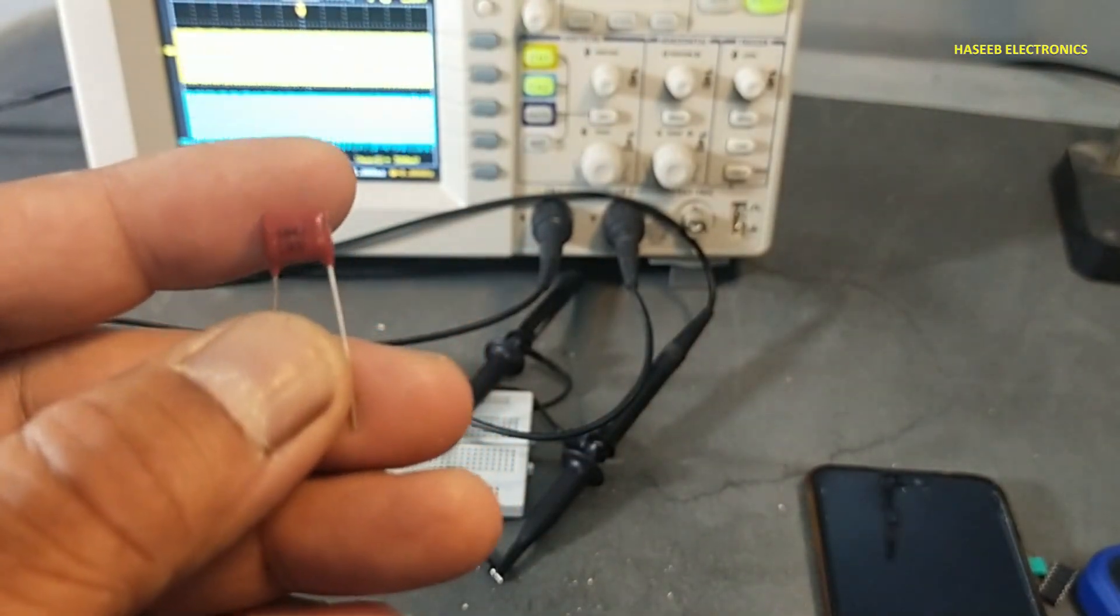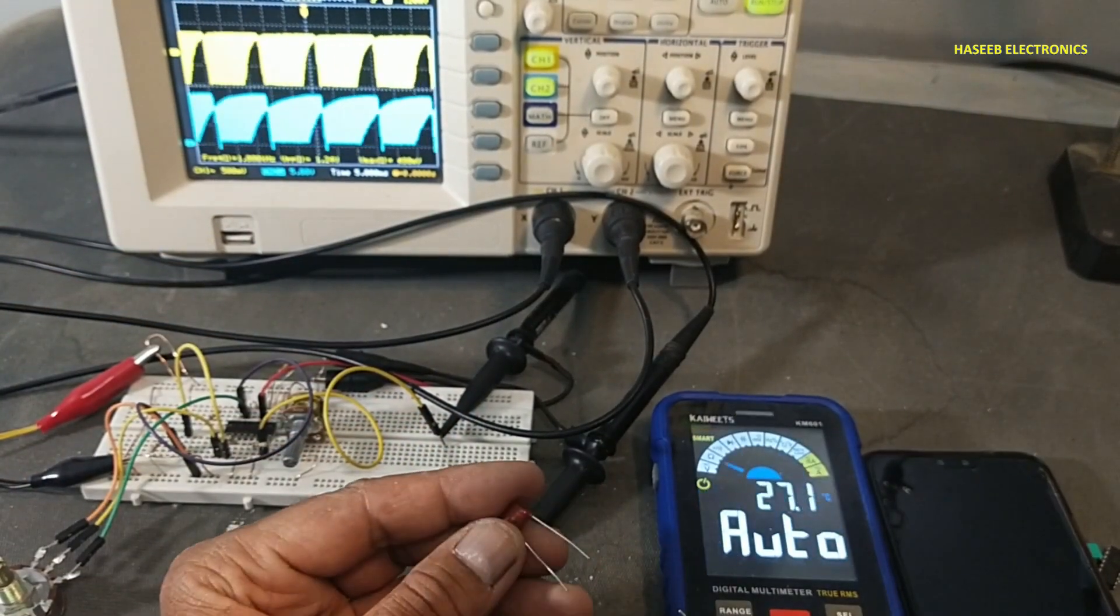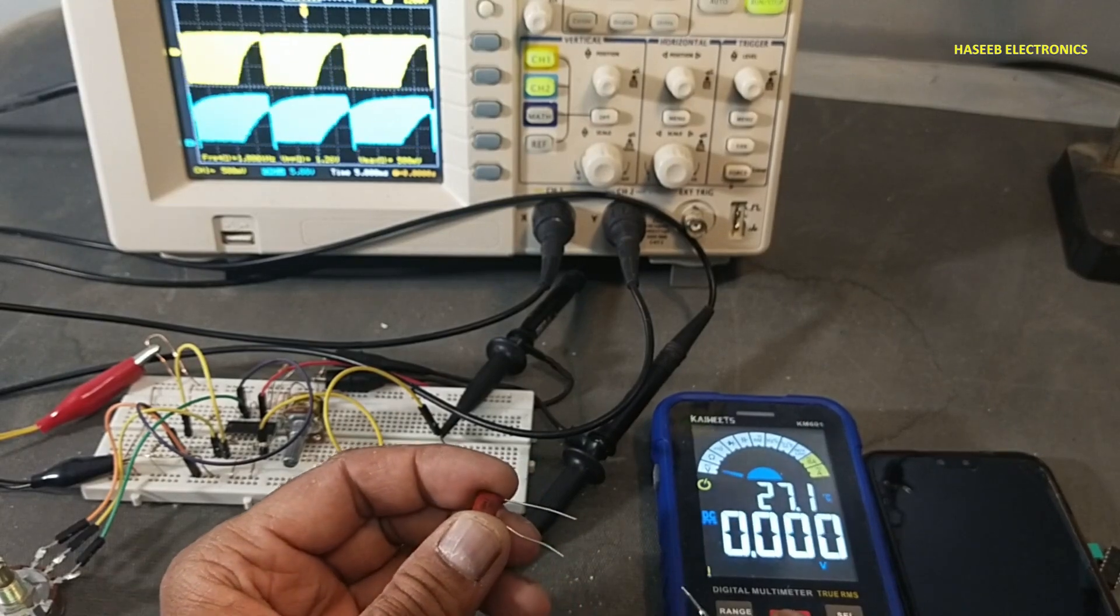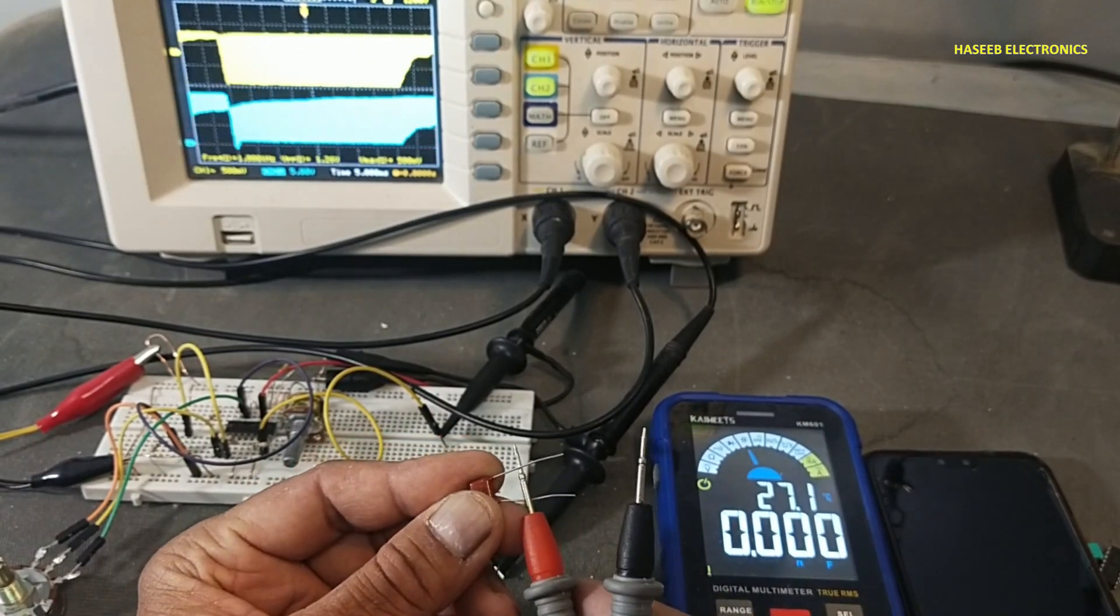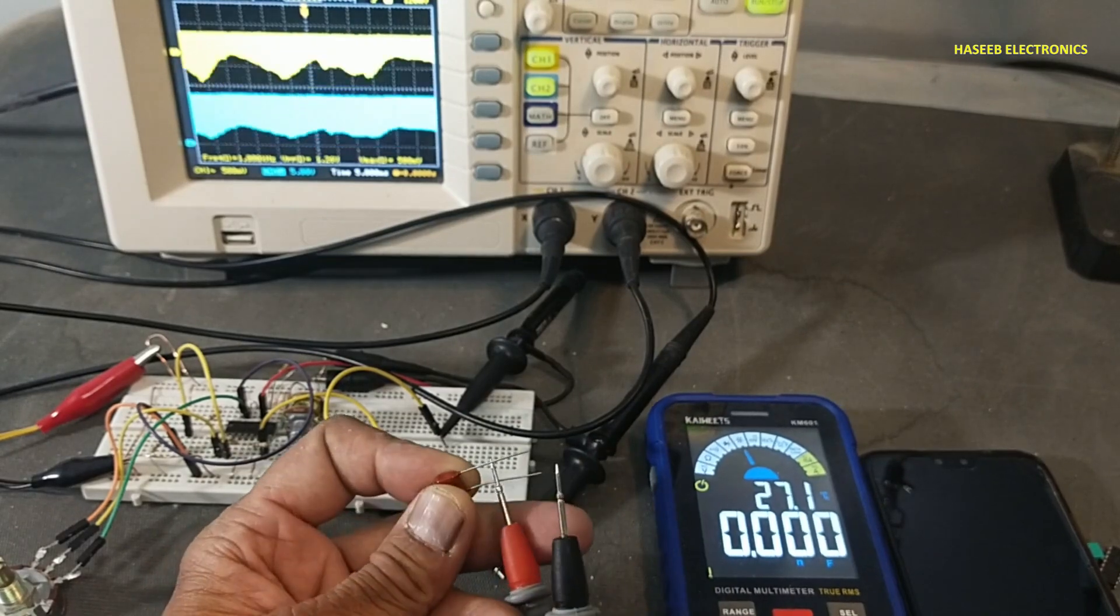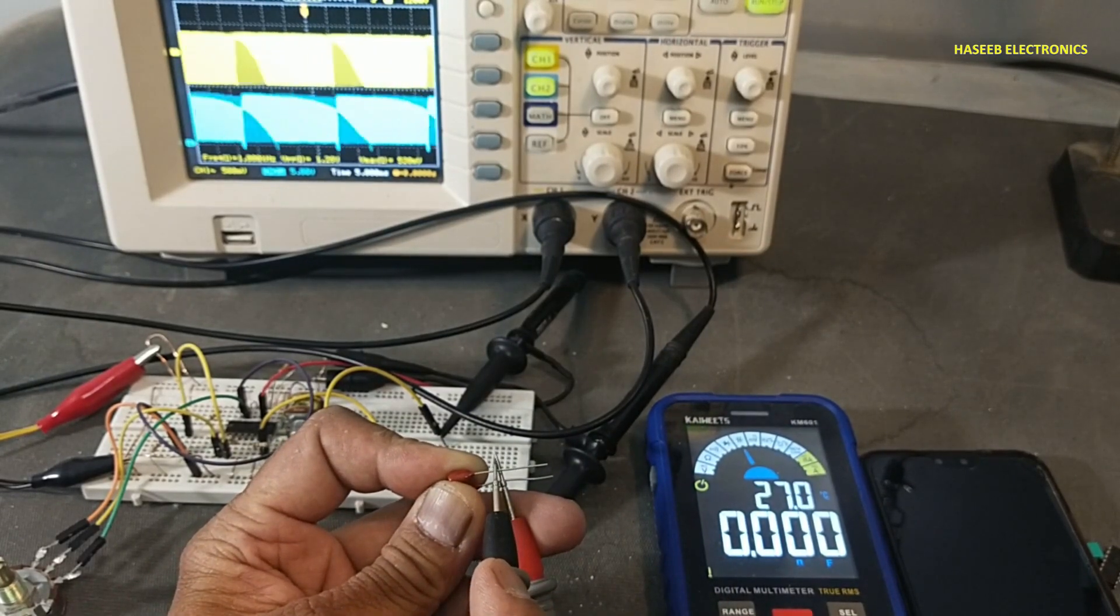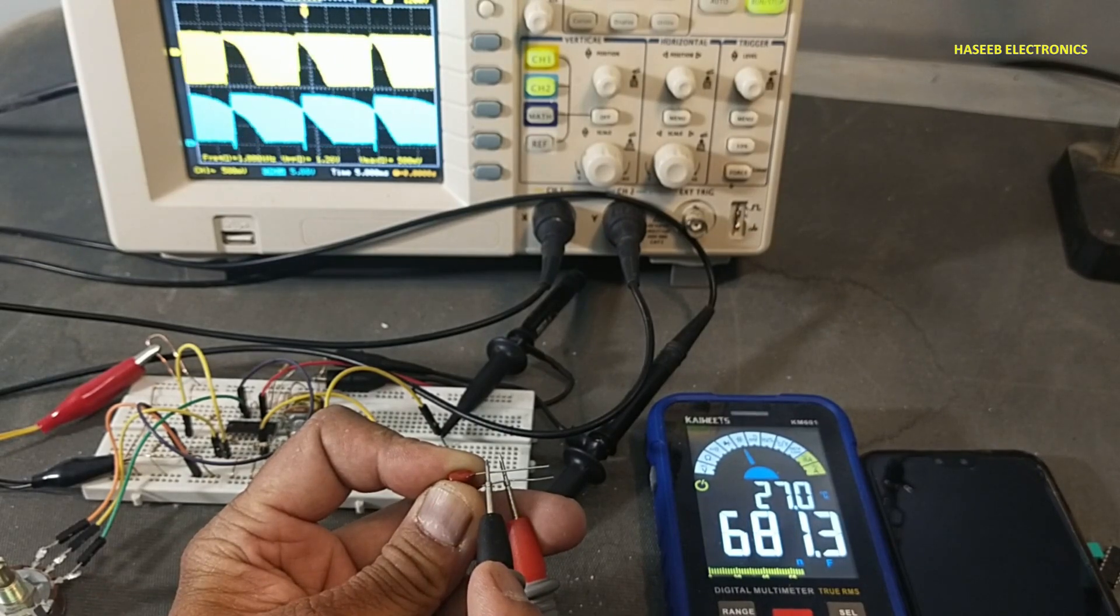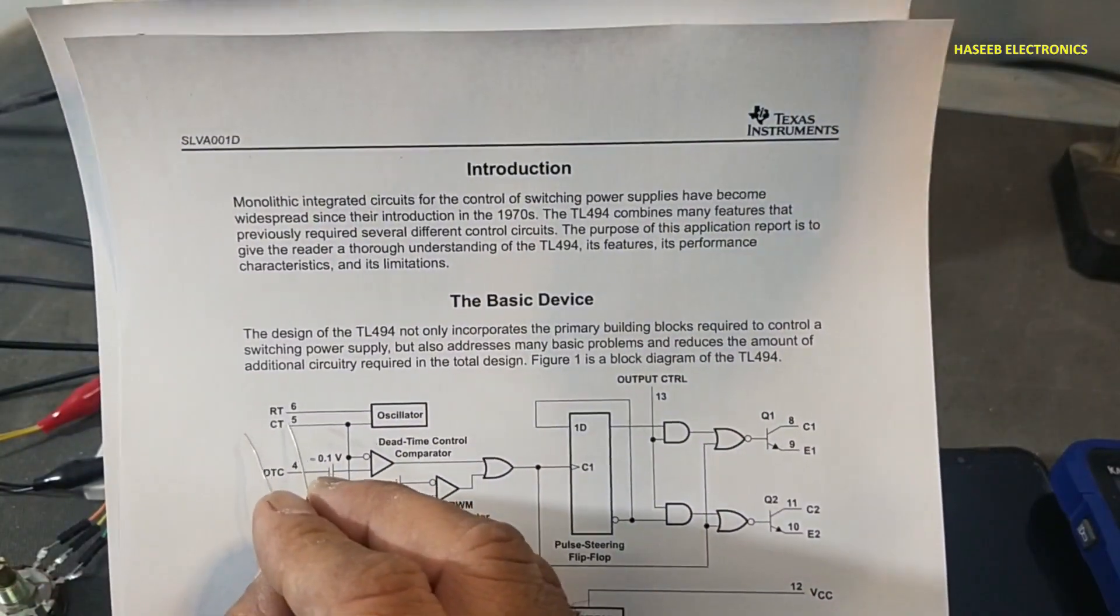For best practice, first we need to select the capacitor within the acceptable range, test its value with some good capacitance meter. Practical capacitor value and its tolerance must be minimum, that will be much better. It is 681 nanofarad. We will connect this capacitor between pin number 5 and ground.